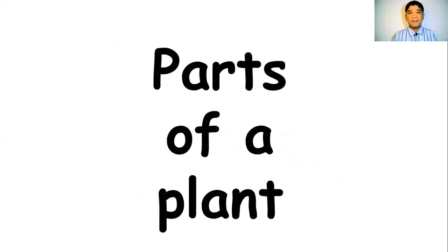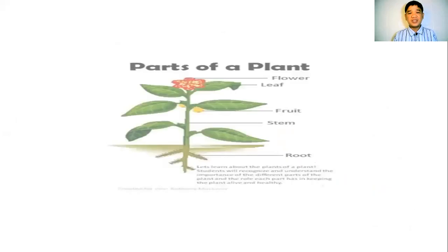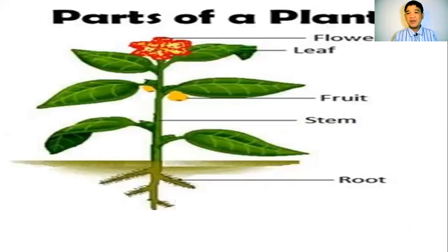So let's talk about the parts of a plant. What are those parts of a plant — can you remember? Let's start with this one. This is a plant and we have what we call the flower, the leaf, the fruit, the stem, and the root. Let me show you the different parts of the plant. Who among you can remember this part of a plant? What do we call this part?